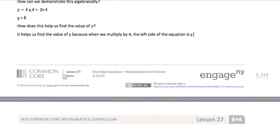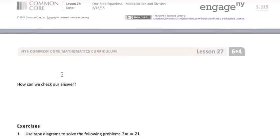We can check our answer by substituting back into the original equation. We're going to do 8 divided by 4 equals 2. And 8 divided by 4 is actually 2. 2 equals 2, so we found the correct answer.